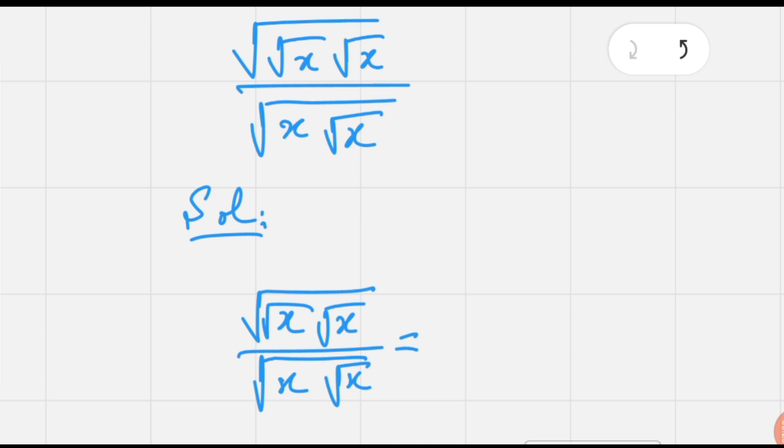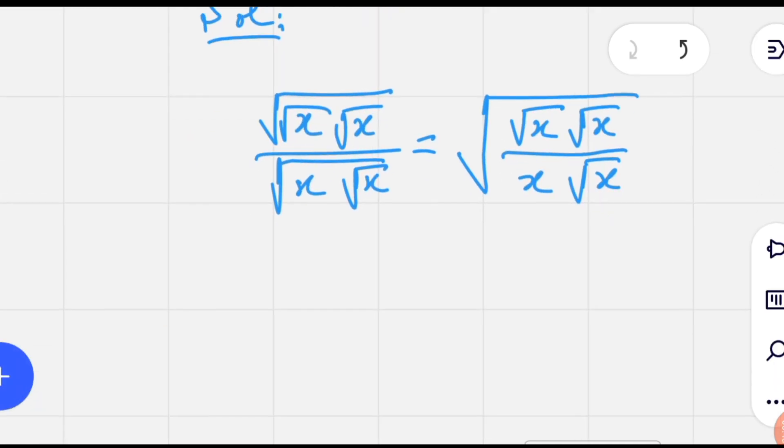In order to simplify further, we can put a single square root over the square root of x times square root of x over x times square root of x. Since square root of x times square root of x equals to x.